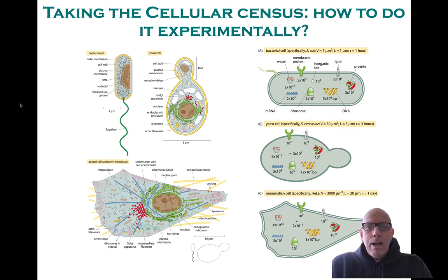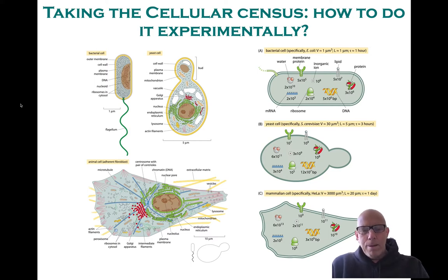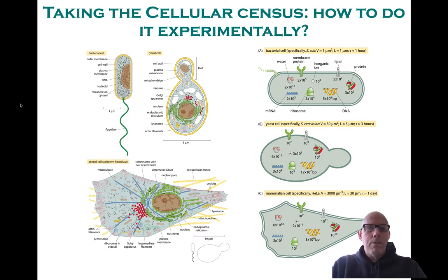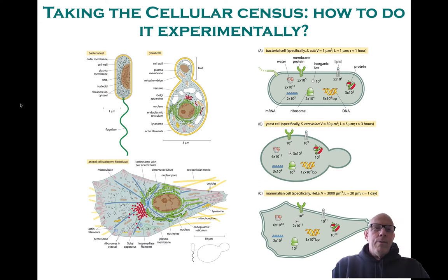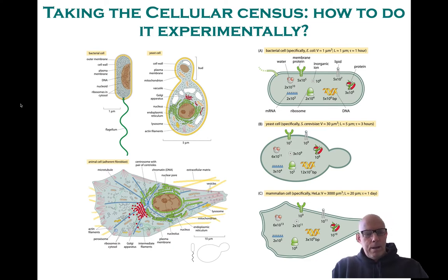This set of cartoons is intended to show some of the key systems that one might like to know about. On the left-hand side, we get a rendering of E. coli, a yeast, and a mammalian cell. Near the scale bar, you can see the relative sizes of those different cells, and on the right-hand side I give a very fast order-of-magnitude impression of the macromolecular census of these different cell types.